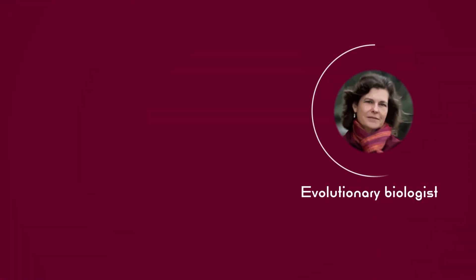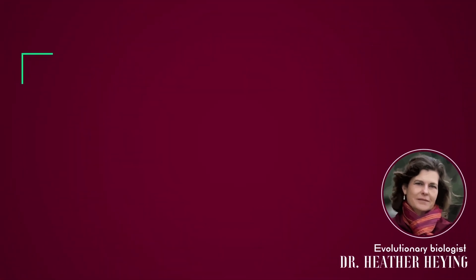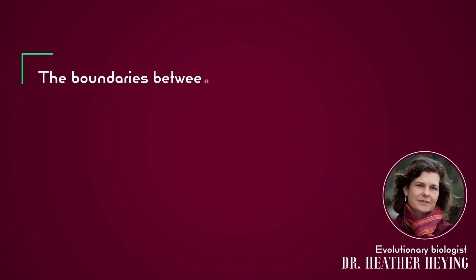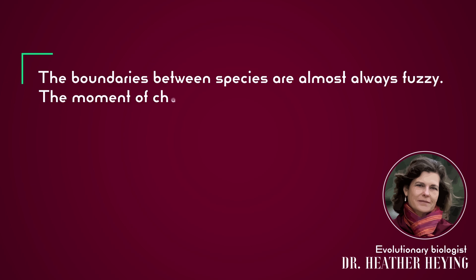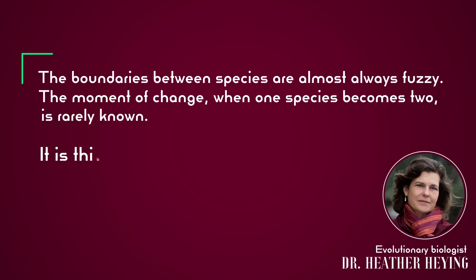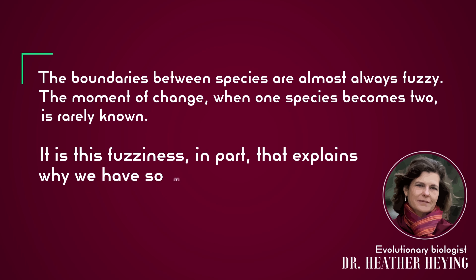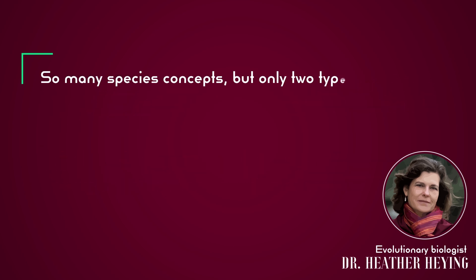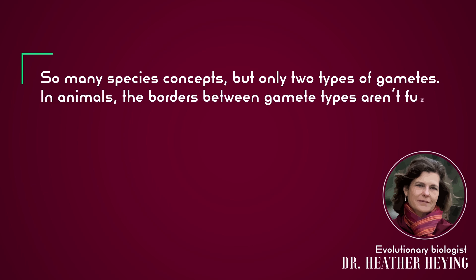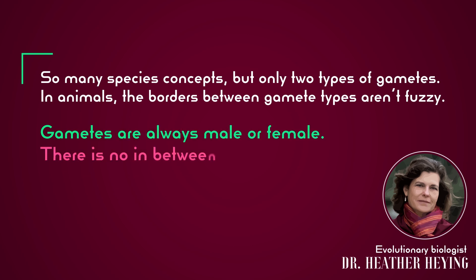Such boundaries in biology can be fuzzy, but the boundaries of gametes are clear. As evolutionary biologist Dr. Heather Hying writes: "It is this fuzziness, in part, that explains why we have so many species concepts. So many species concepts, but only two types of gametes. In animals, the borders between gamete types aren't fuzzy. Gametes are always male or female. There is no in-between."